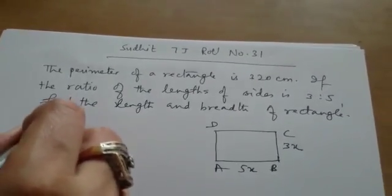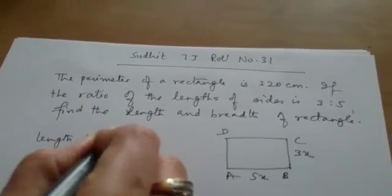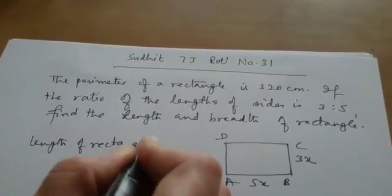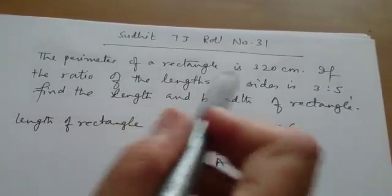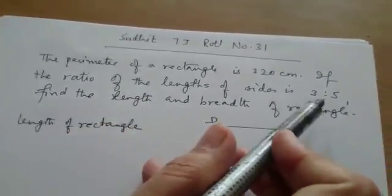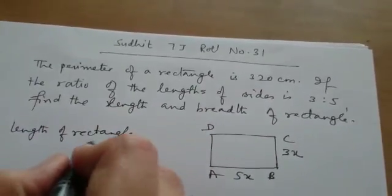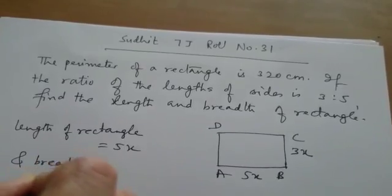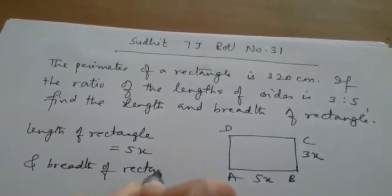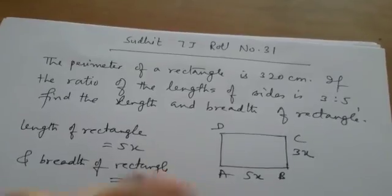So, we have assumed that let length of rectangle 5x. It is given that length of the sides is 3 is to 5. So, you are assuming length of rectangle is equal to 5x and breadth of rectangle 3x. Okay. Fine.